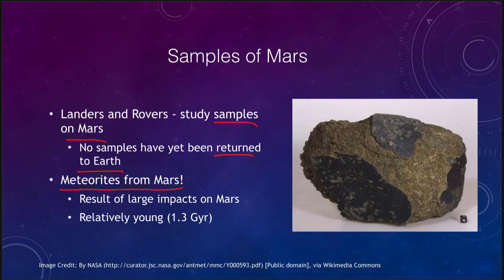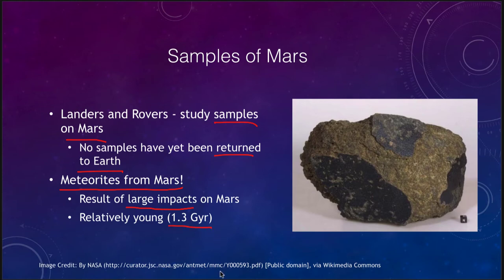How can we get a piece of Mars here? There have been large impacts on all of the planets, including Mars. In a very massive impact, material could be thrown off with the escape velocity of Mars, escape into space, and some of those pieces would eventually make their way to Earth. Interestingly, these meteorites are relatively young — only 1.3 billion years old — so this would have happened in the more recent past, not dating back to the very early history of the solar system 4 billion years ago. But those are real samples of Mars we can actually study here on Earth.